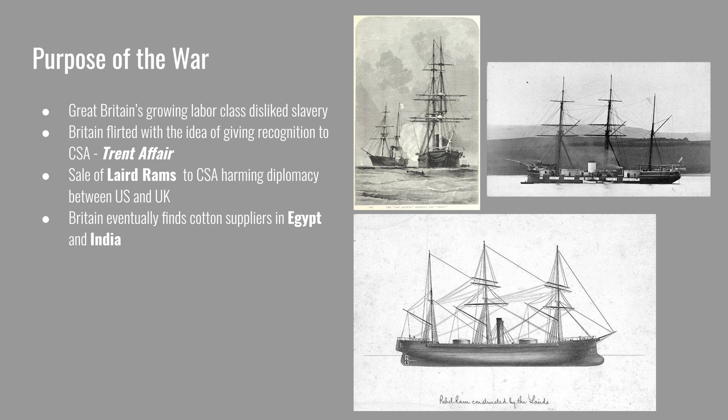Frederick Douglass had been received by large crowds when he visited Britain in 1845, and Uncle Tom's Cabin had been as popular in Britain as it had been in the North. However, the economic trade links between the South and Britain were so strong that Britain did consider helping the Confederacy to maintain its steady supply of cheap cotton.